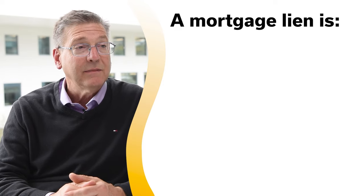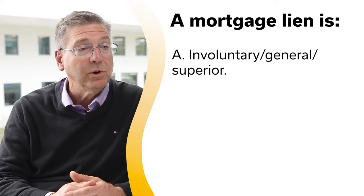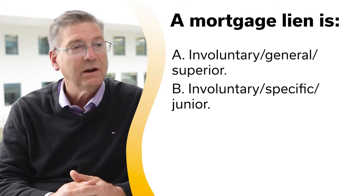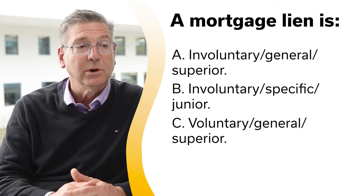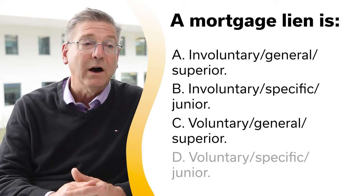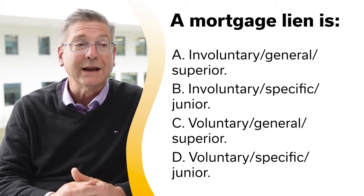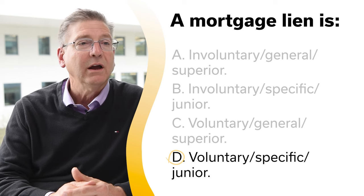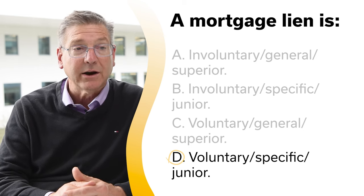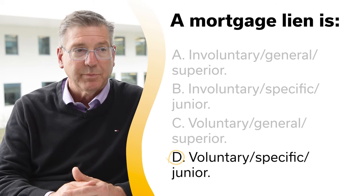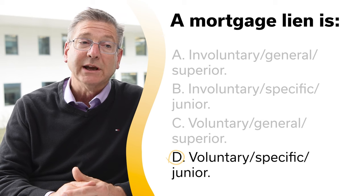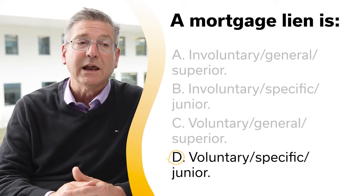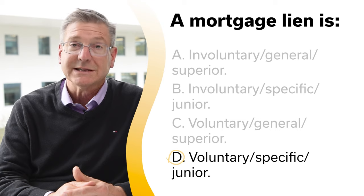A mortgage lien is: A, involuntary, general, superior; B, involuntary, specific, junior; C, voluntary, general, superior; or D, voluntary, specific, junior. The correct answer is D, voluntary, specific, junior. Liens are either voluntary or involuntary, general or specific, superior or junior. Mortgage liens are voluntary, specific, and junior in that they are specific to a house and inferior or junior as to the order in which they are satisfied.